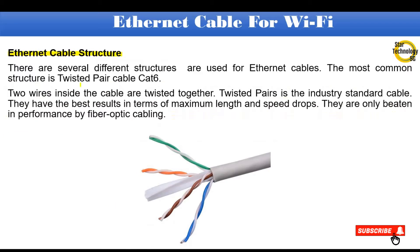Ethernet cable structure. There are several different structures used for Ethernet cables. The most common structure is twisted pair cable CAT6. Two wires inside the cable are twisted together. Twisted pairs is the industry standard cable, with the best results in terms of maximum length and speed. They are only beaten in performance by fiber optic cabling. CAT6 cable has four pairs: green and white-green, orange and white-orange, brown and white-brown, blue and white-blue.